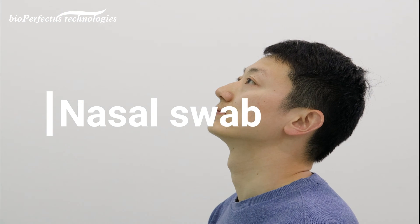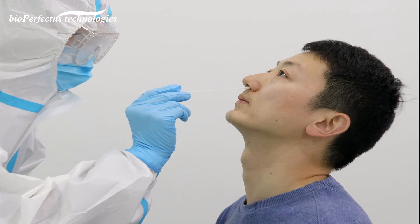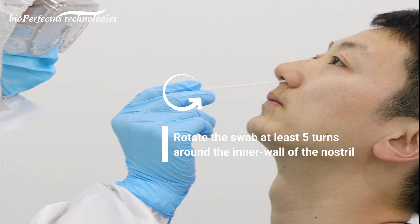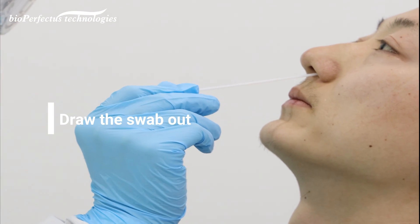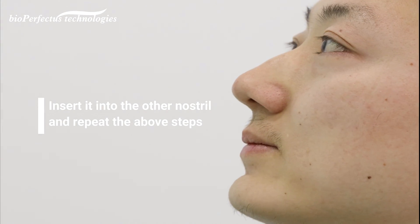Nasal swab: Insert the swab into one nostril by approximately three-quarters inch deep. Rotate the swab at least five turns around the inner wall of the nostril. Draw the swab out, insert it into the other nostril, and repeat the above steps.